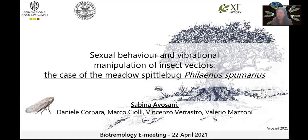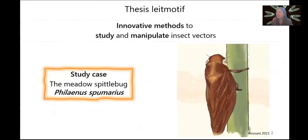I would like to show you some of the outcomes of my PhD project, which is entitled 'Sexual Behaviour and Vibrational Manipulation of Insect Vectors: the case of the meadow spittlebug Philaenus spumarius.' The leitmotif of my thesis is to use innovative methods to study and manipulate the behaviour of insect vectors, and the main study case is Philaenus spumarius.